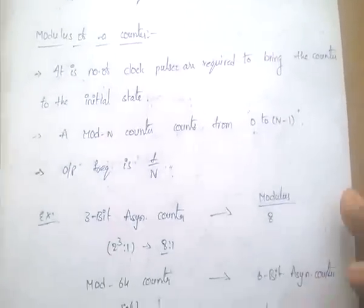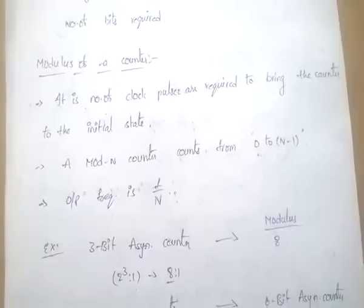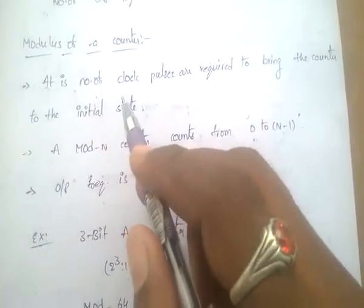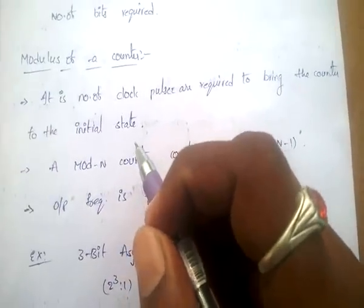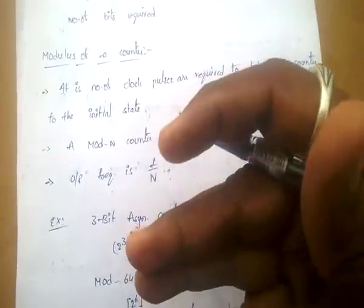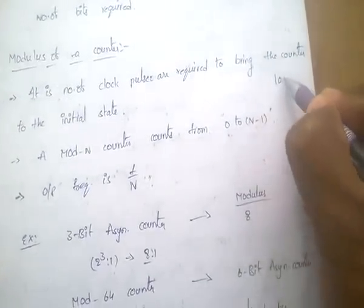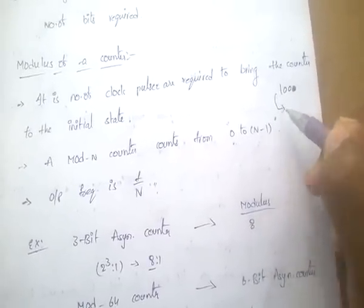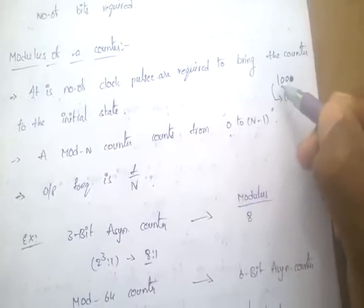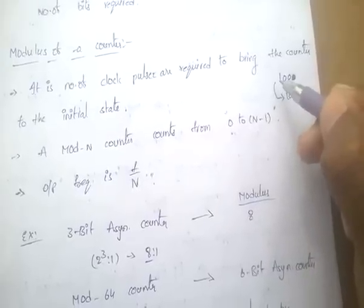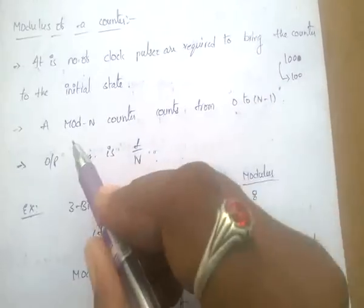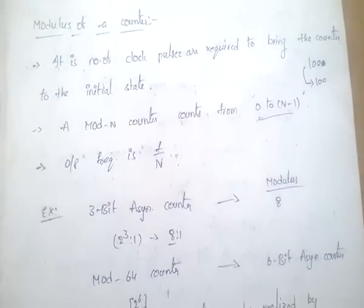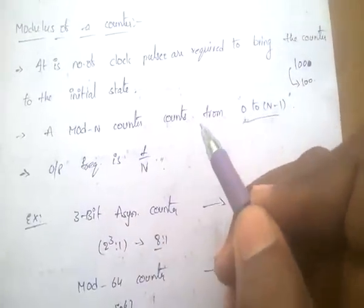The modulus of a counter is the number of clock pulses required to bring the counter back to its initial state. For a mod-n counter, it counts from 0 to n−1. For example, a mod-6 counter counts from 0 to 5. The output frequency is f/n.